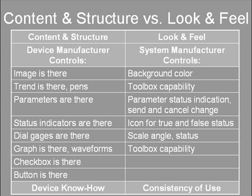It is the device manufacturer that controls if there are status indicators for diagnostics. The system manufacturer controls if the status indicators look like red LEDs or regular window checkboxes. It is the device manufacturer that controls if there are dial gauges on the page. The system manufacturer controls if the scale is 180 degrees or 270 degrees. It is the device manufacturer that controls if there is a graph on the page and how many waveforms are displayed. The system manufacturer controls the toolbox for pan and zoom. It is the device manufacturer that controls if there is a checkbox or button on the page, while the system manufacturer controls what it looks like — usually a regular Windows control. That is, the device manufacturer provides device know-how and the system manufacturer ensures consistency of use.